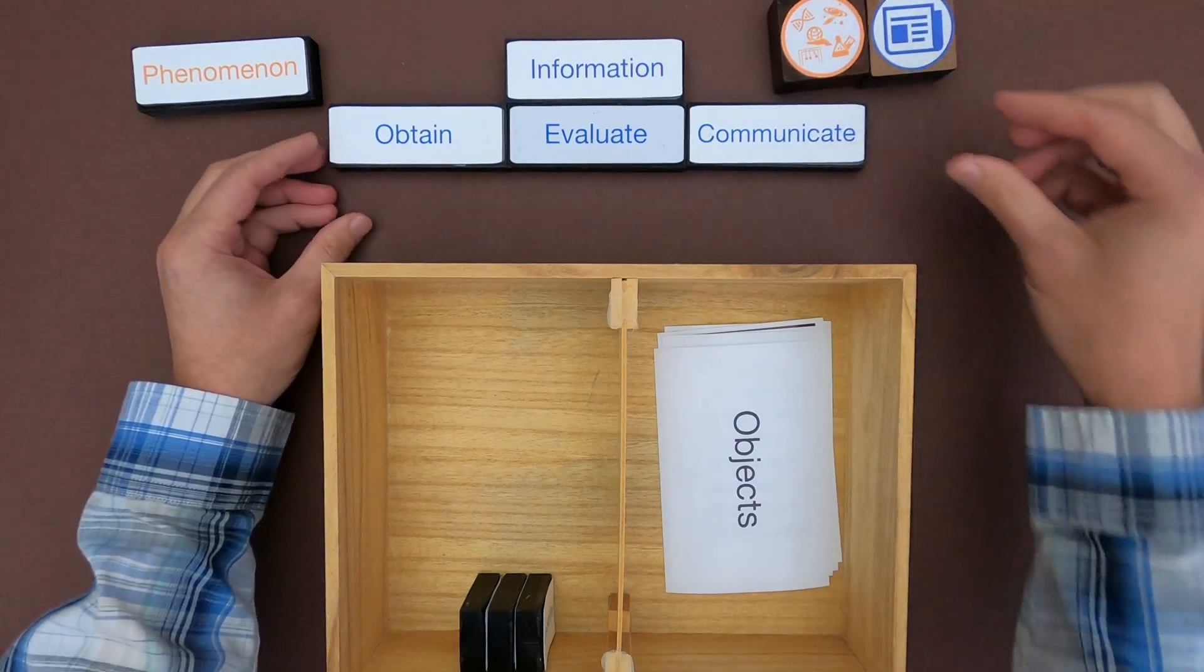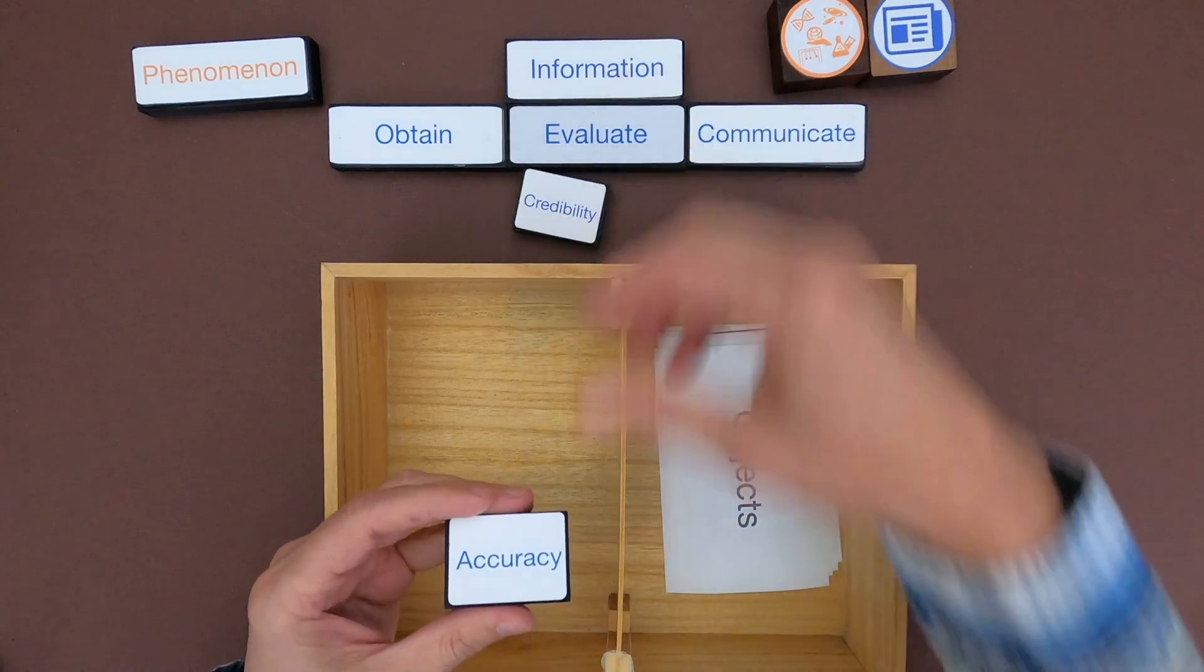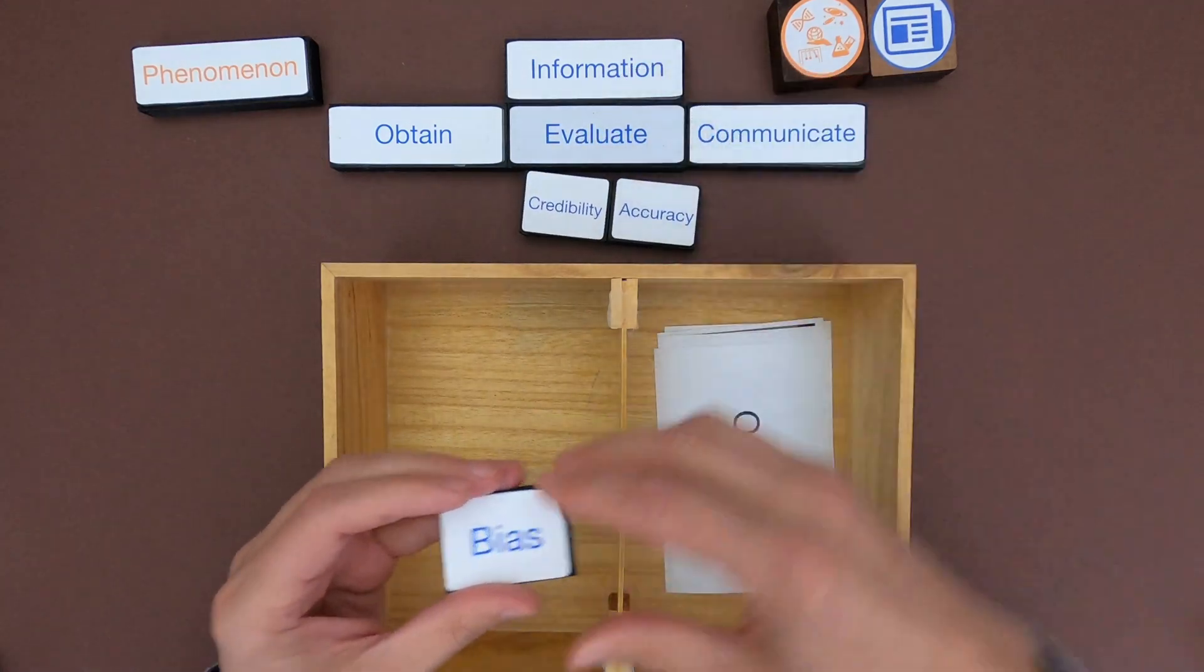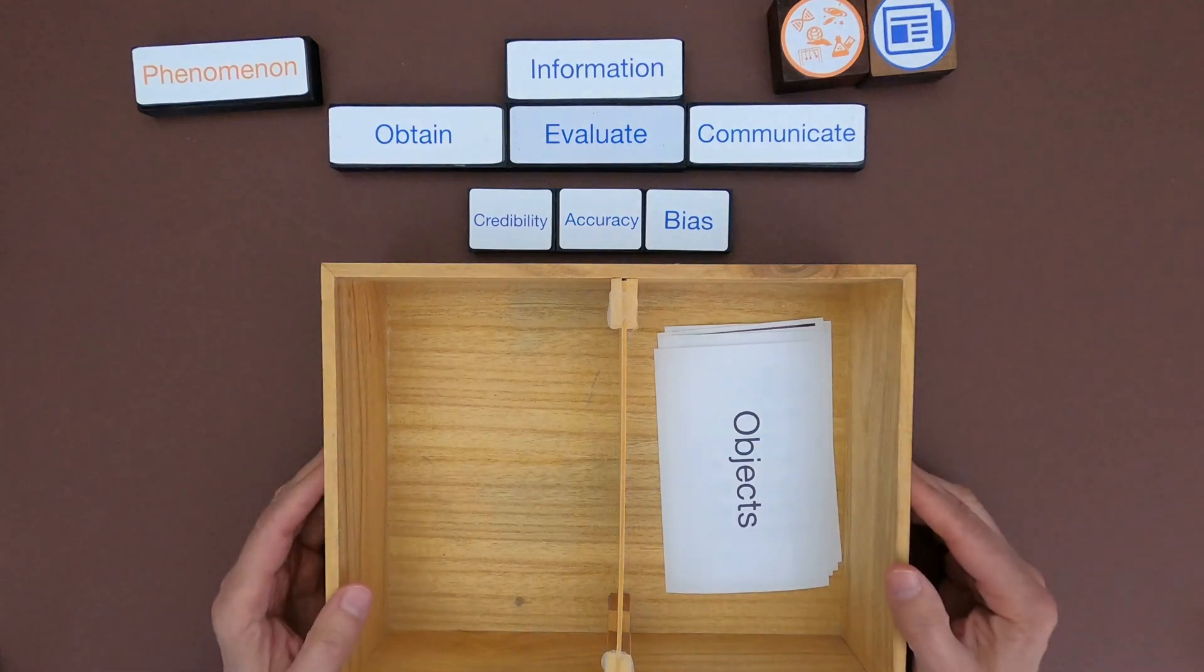Now how do we evaluate that information? You're going to do it in three ways. You're going to be looking for credibility, you're going to be looking for accuracy, and then the last thing you're going to look for is bias.